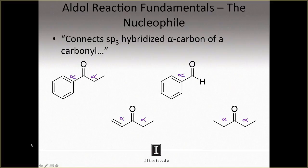Notice how the structure in the upper right has only one alpha carbon. The right side of the carbonyl, being an aldehyde, contains only a hydrogen atom. Now let us identify which of these carbons are sp3 hybridized. Remember that an sp3 hybridized carbon is one that contains four sigma bonds. If we look at the structure in the upper left, this alpha carbon on the left side of the carbonyl is not sp3 hybridized. In contrast, the carbon on the right has implicit hydrogens, and so this carbon is in fact sp3 hybridized and can be used in an aldol reaction.